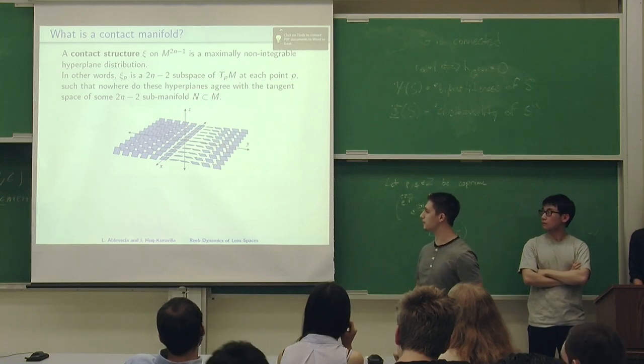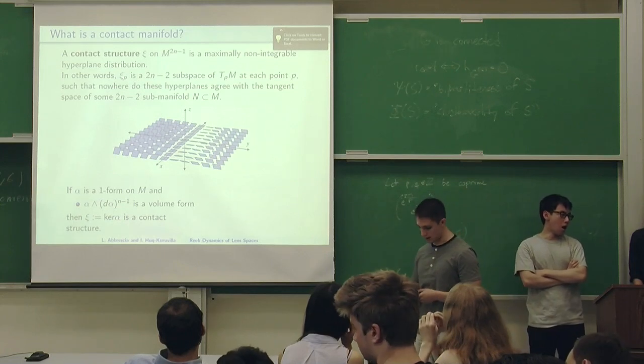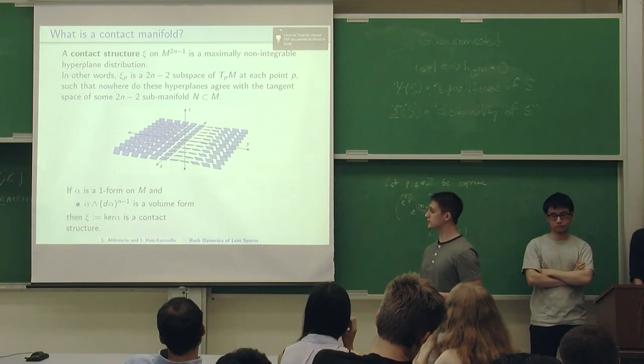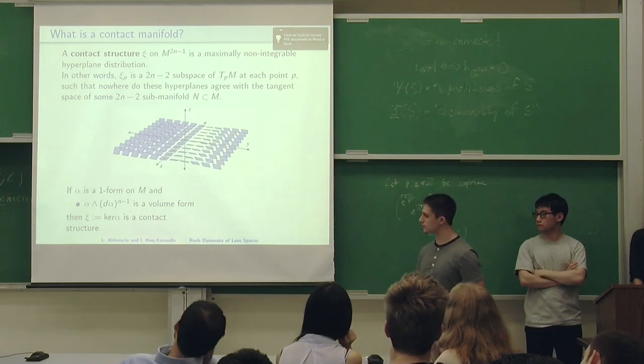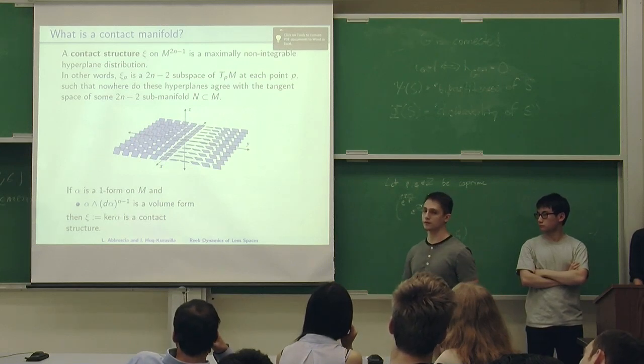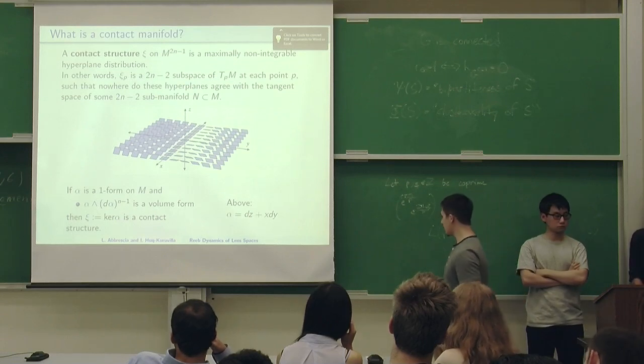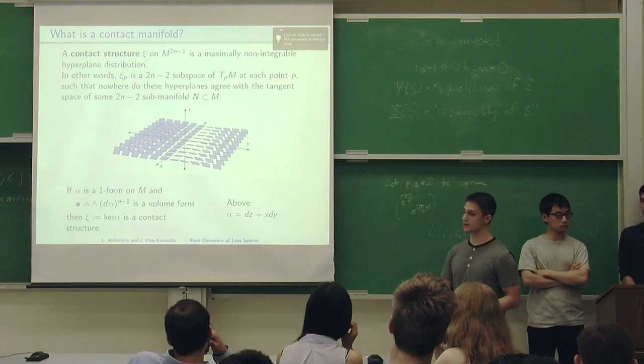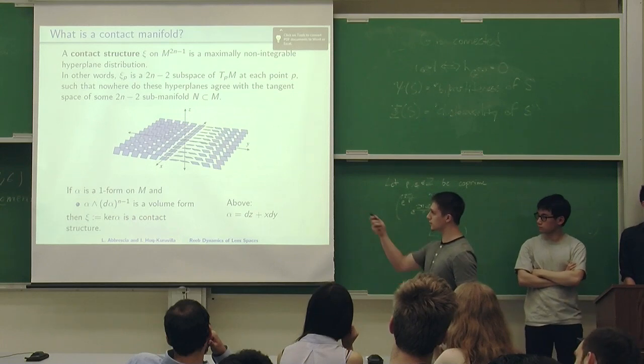Now that we have some idea of what a contact structure is, let's try to think about how we can find them. If alpha is a one form on a manifold such that alpha wedge d alpha to the n minus 1 is a volume form, then the kernel of this is a contact structure. We call one forms that satisfy this condition a contact form. In our case of R3, we have alpha is dz plus x dy. We can easily compute that alpha wedge d alpha is dx wedge dy wedge dz, which is the volume form on R3. The kernel of this is the contact structure we see in this picture.